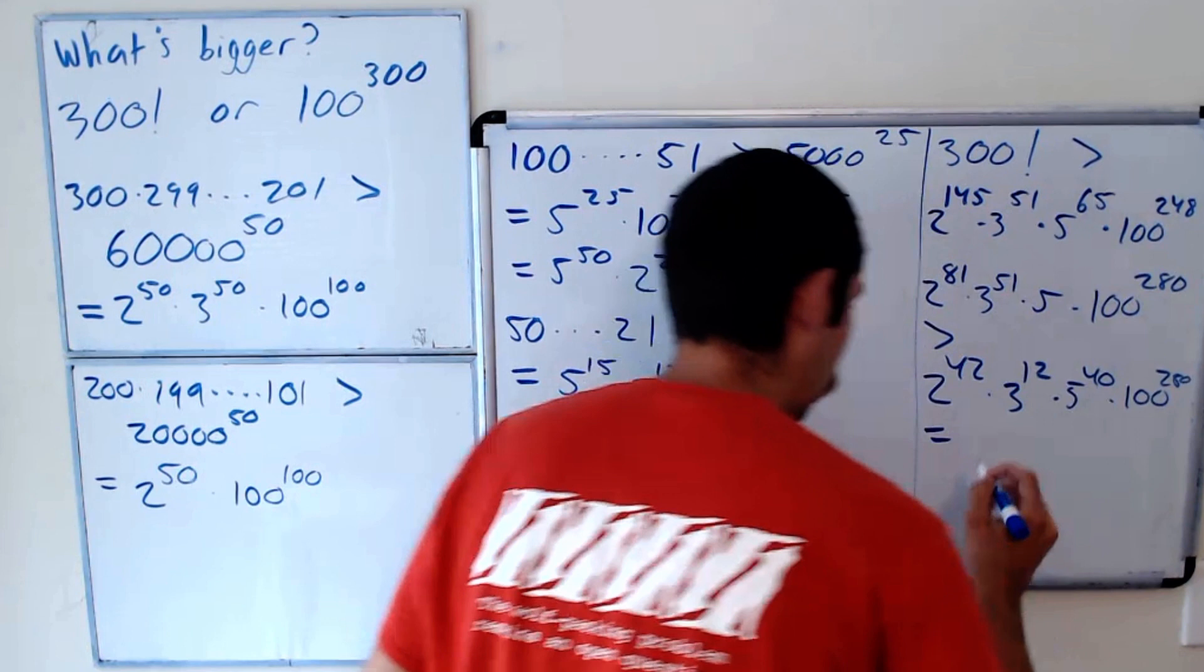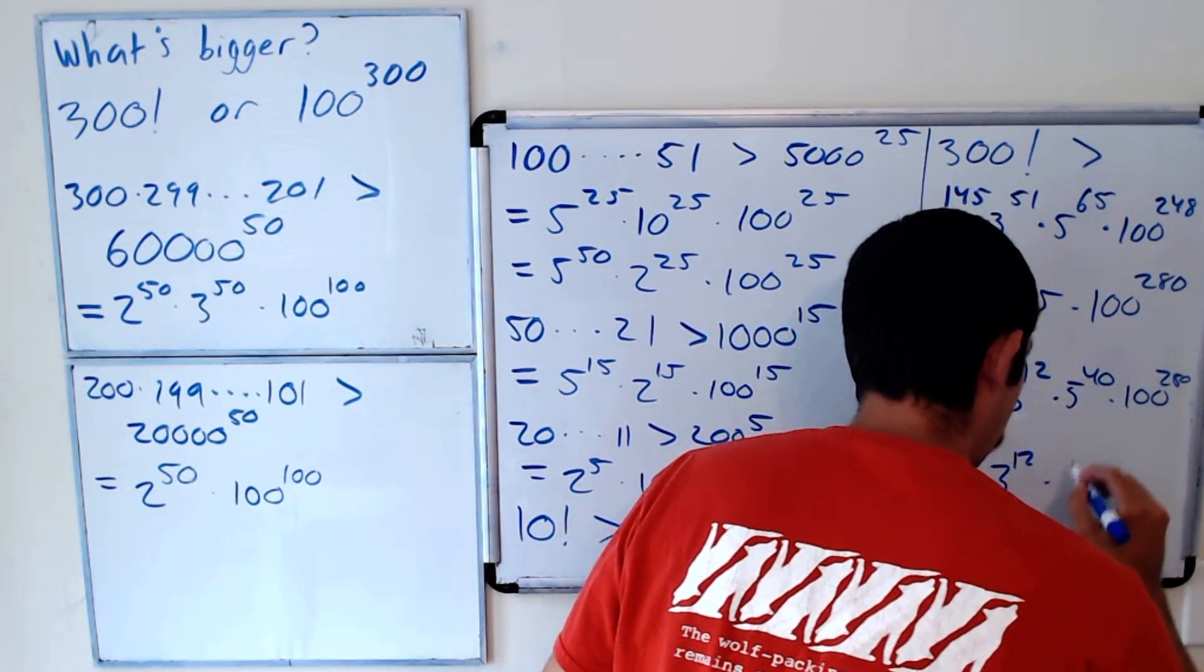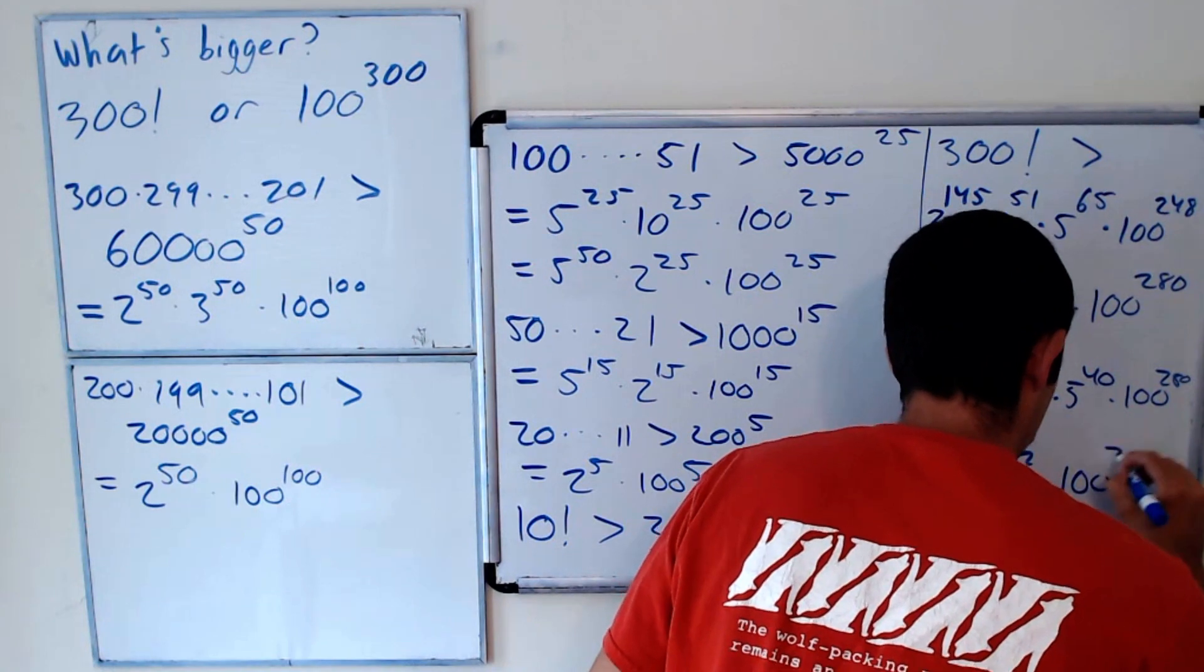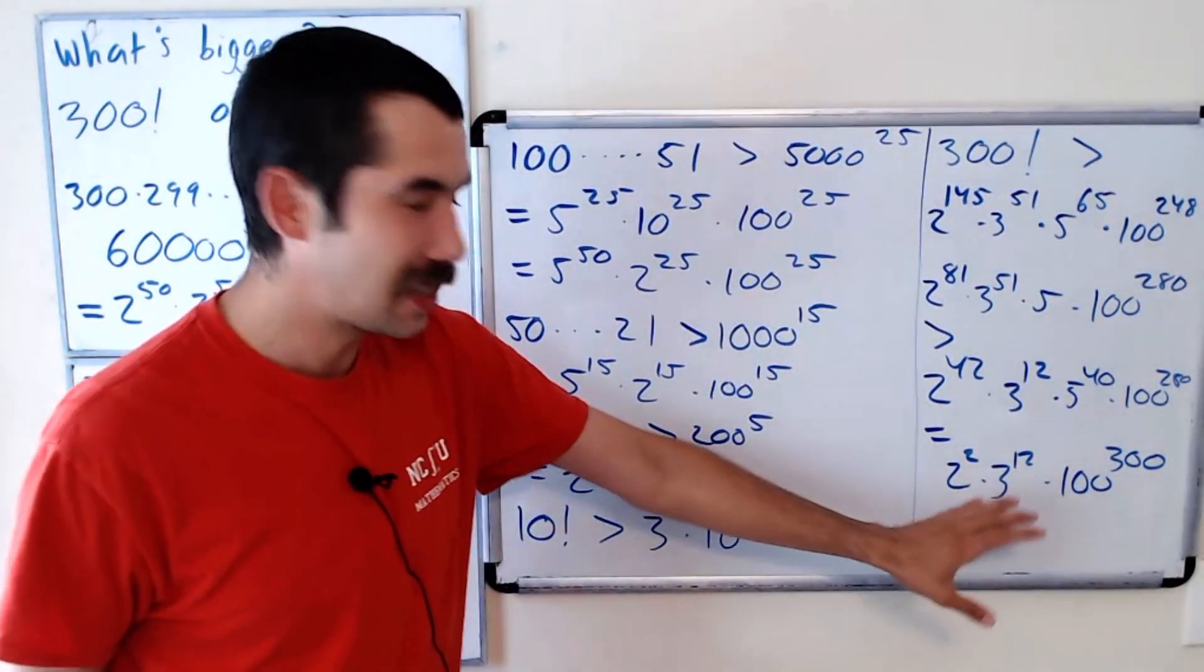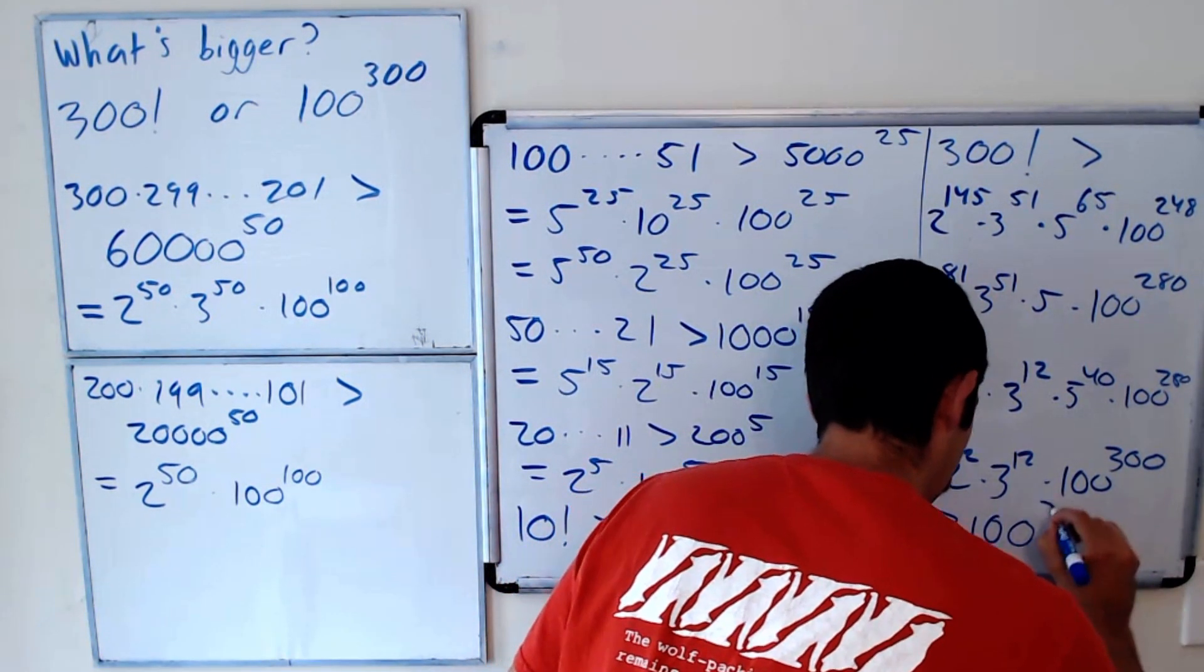So this is equal to 2 squared times 3 to the 12 times 100 to the 300 power. And this is clearly greater than 100 to the 300.